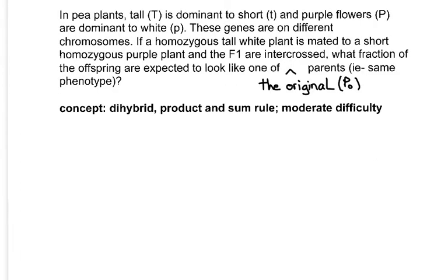Now in the same pea plants, tall is again dominant to short and purple flowers are dominant to white. These genes are on different chromosomes, meaning they're independently assorting. A homozygous tall, homozygous white plant is mated to a short homozygous purple plant.